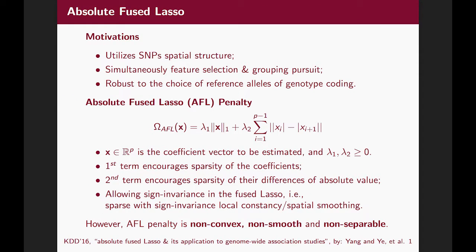The Absolute Fuse Lasso penalty is inspired by the Fuse Lasso, which utilizes SNP spatial structure. The AFL model performs simultaneous feature selection and grouping pursuit, and it is designed to be robust to the choice of reference elements in genotype coding. As shown in the formula below, the first term of the AFL model encourages sparsity in the coefficient, and the second term encourages sparsity of the successive difference of absolute value. In other words, the proposed Absolute Fuse Lasso penalty allows sign invariants in the Fuse Lasso — that is, highly similar adjacent features can potentially be grouped together, even if their signs are different.